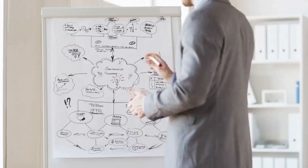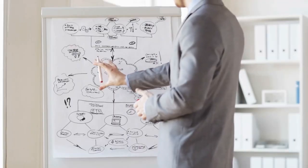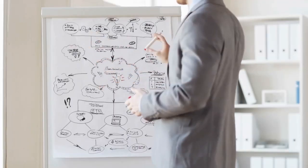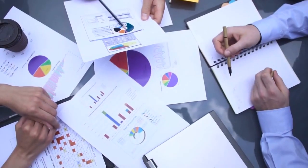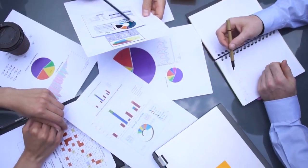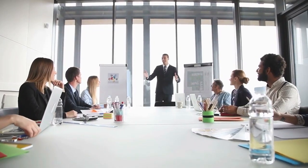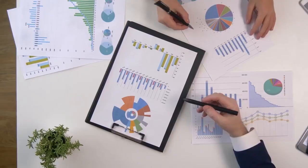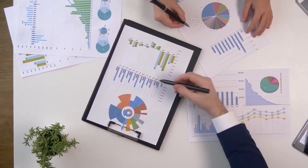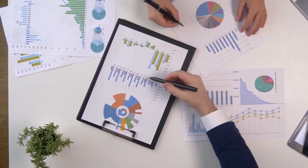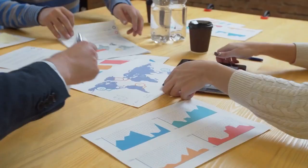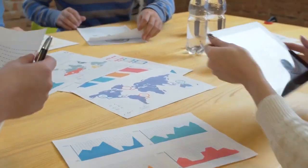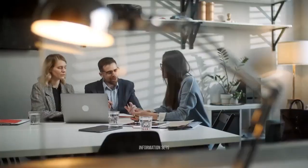A Game Tree is a graphical representation of the sequential decision-making process in the game. It shows the different stages or rounds of the game, the available choices at each stage, and the potential outcomes resulting from those choices. Game Trees are particularly useful for analyzing games with multiple stages or players.